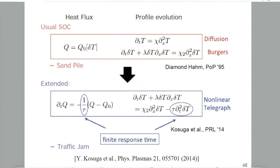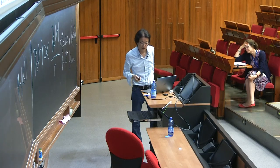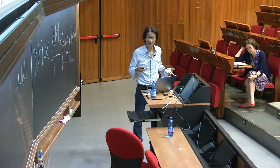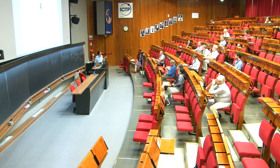Kosuga and Diamond wanted to understand it. This is basically an extension of the sandpile model I told you before. This kind of heat flux expression has joint reflection symmetry, and the governing equation we get from this is nothing but the Burgers equation. If you include finite response time of heat—from instantaneous heat flux to the average heat flux—you get the nonlinear telegraph equation, and you can find something like E cross B staircase.